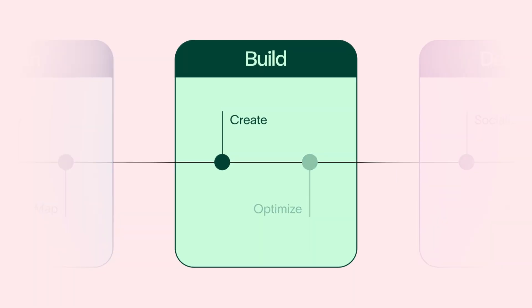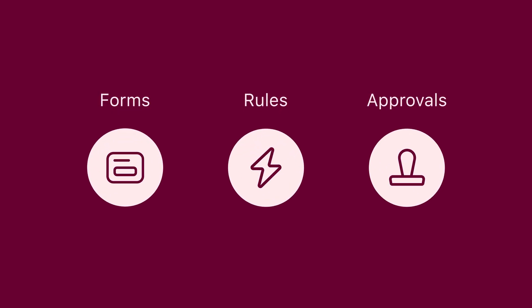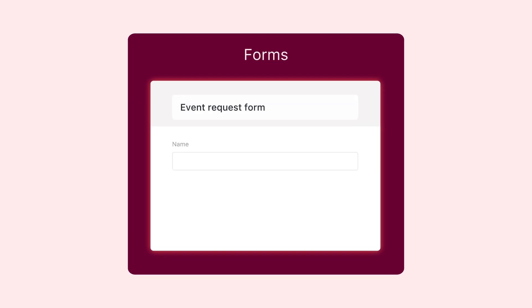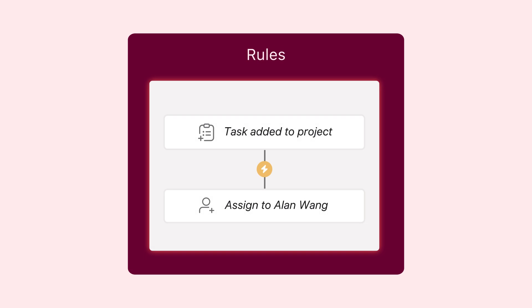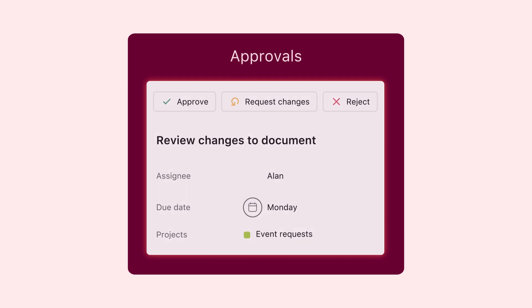Welcome back. You set up an Asana project to serve as the foundation of your workflow. Now you'll learn how to optimize your workflow with additional Asana features. Let's review some of the features you can use: forms can help you standardize requests, turning submissions into actionable tasks; rules can help you automate repetitive steps, eliminating busy work; and approvals can help streamline review cycles.